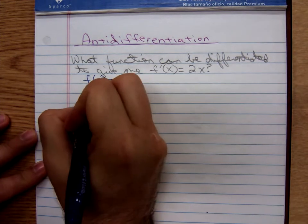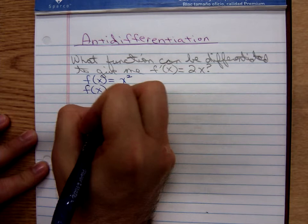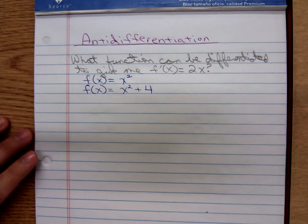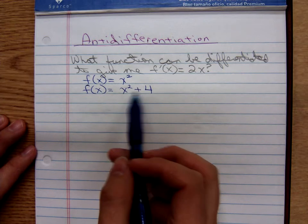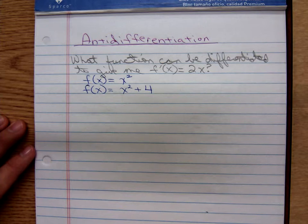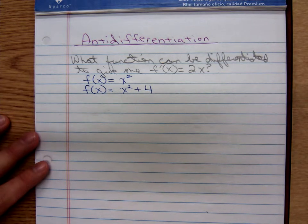How about f(x) = x² + 4? The derivative of x² is 2x, the derivative of 4 is 0. So yeah, that'd give us f'(x) = 2x. Can you think of another one?